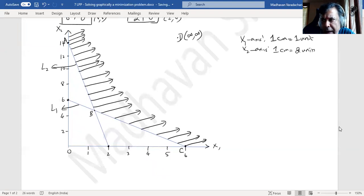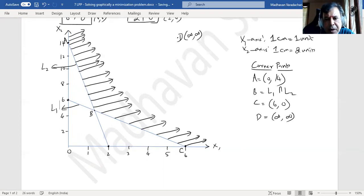So let me define the corner points. This will be point A, this is another corner point B, this is third corner point C. Somewhere here you will have point D at infinity. Point A is (0, 14), Point B is the intersection of line 1 and line 2, Point C is (6, 0), and Point D is (∞, ∞). These are the corner points, and the feasible region is ABCD.